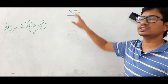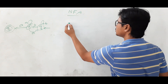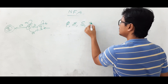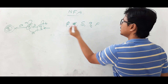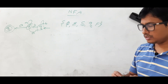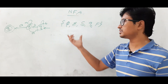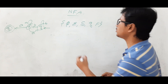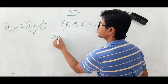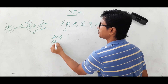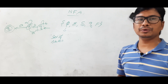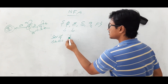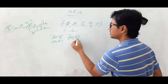NFA can be represented using five tuples: Q, Σ (epsilon), δ (delta), q₀, and F. If you watched my previous videos, the DFA was also represented using these five tuples. Q is the set of states in an NFA, and Σ is the set of alphabets.